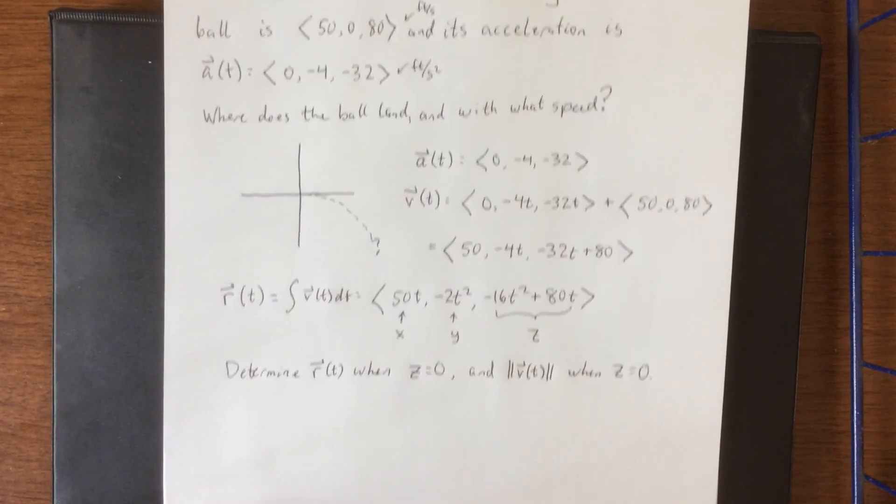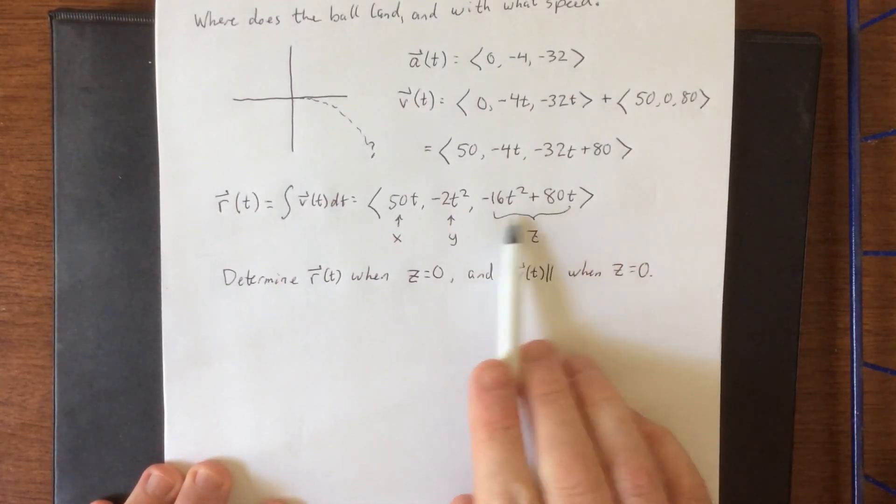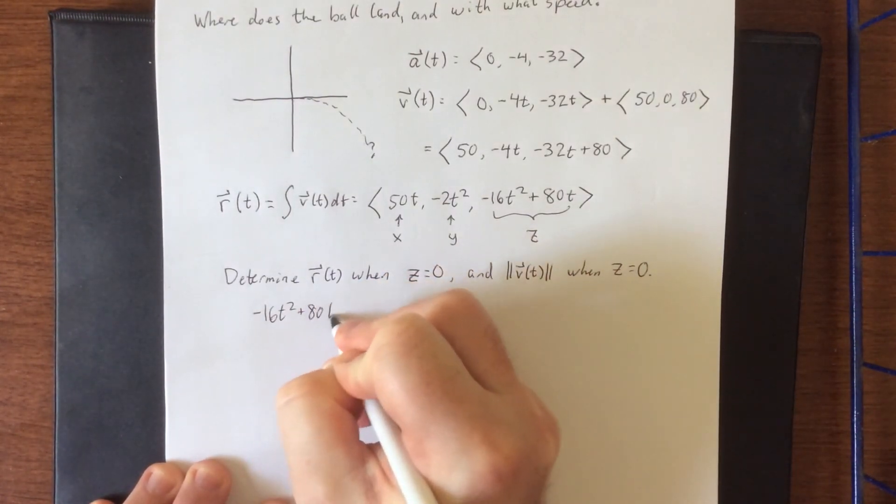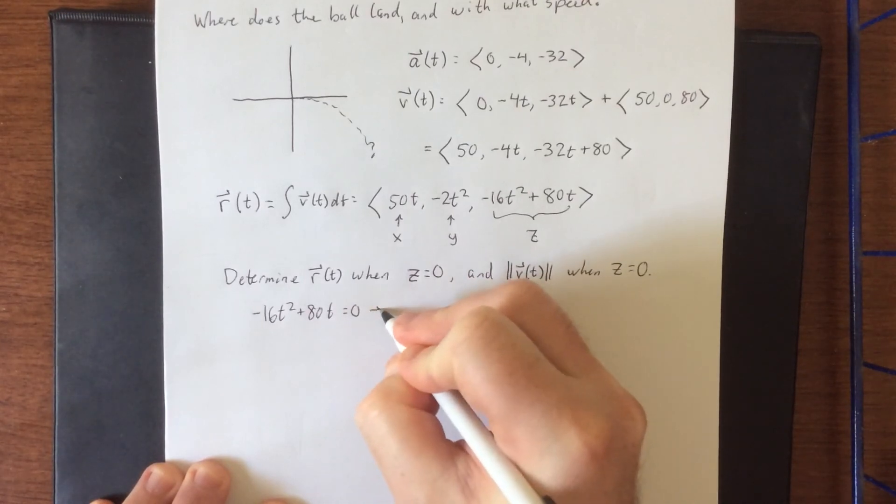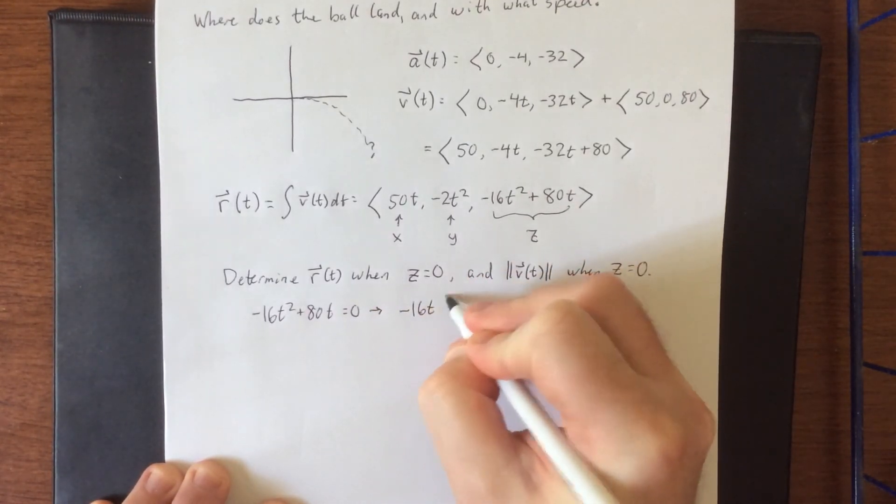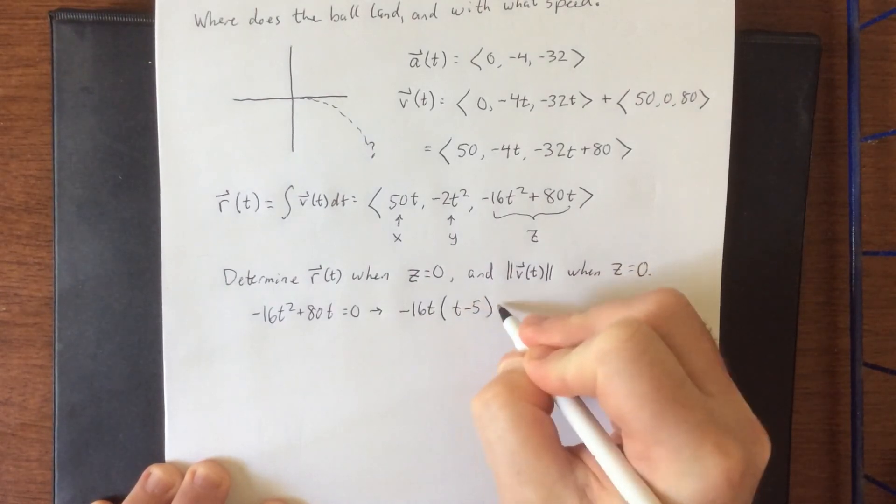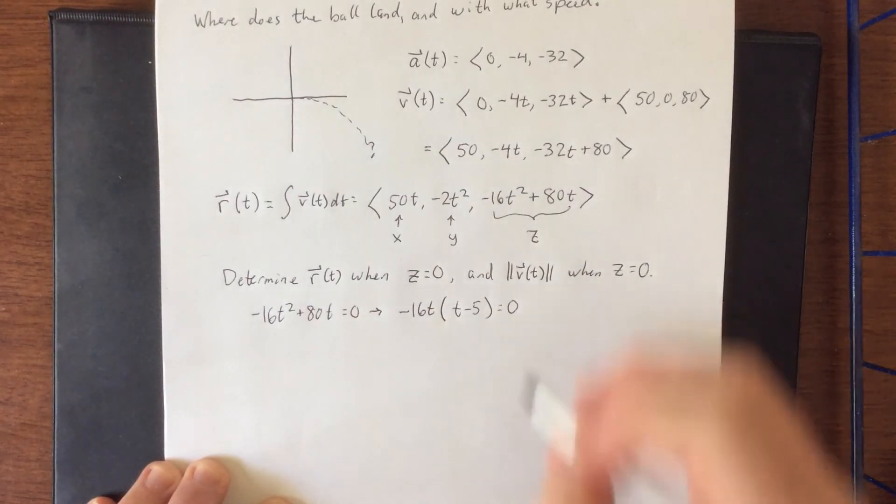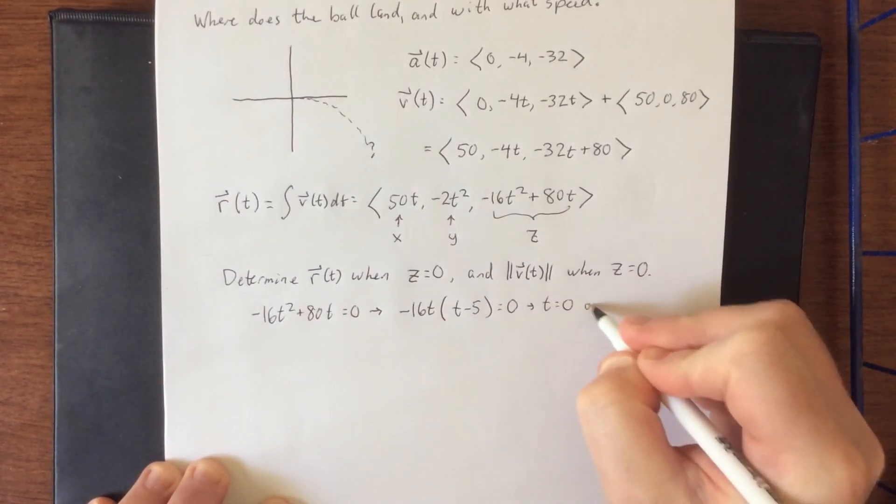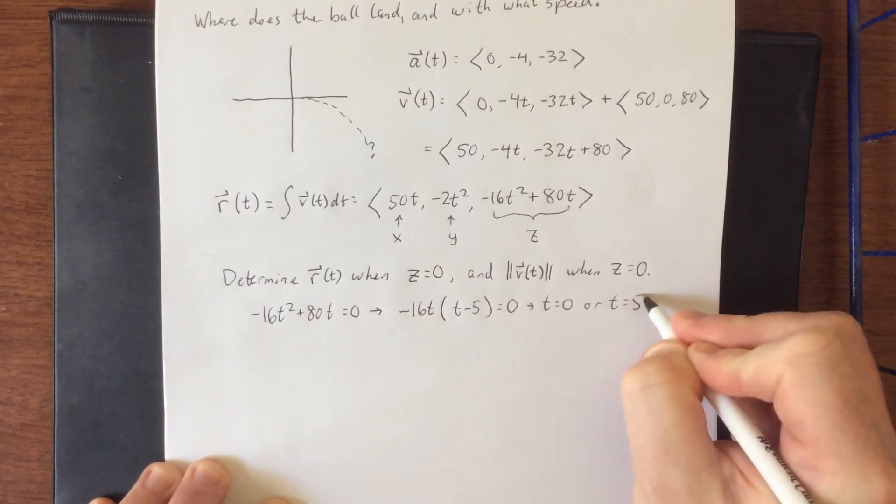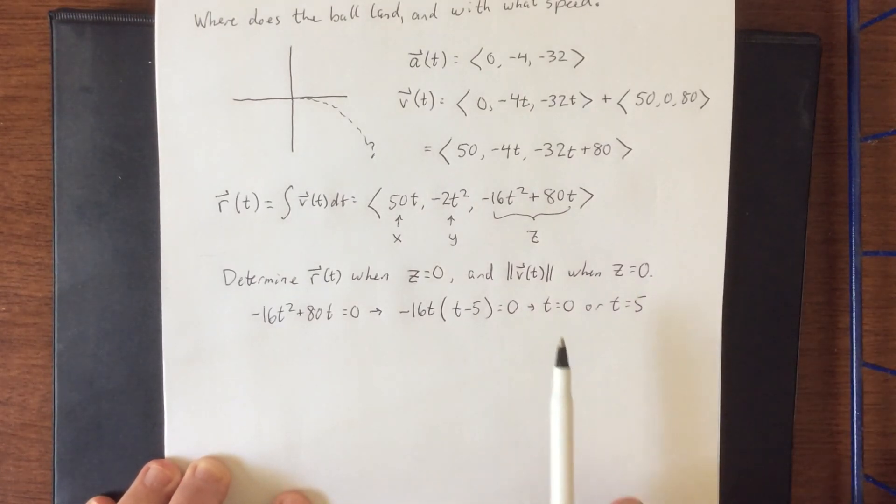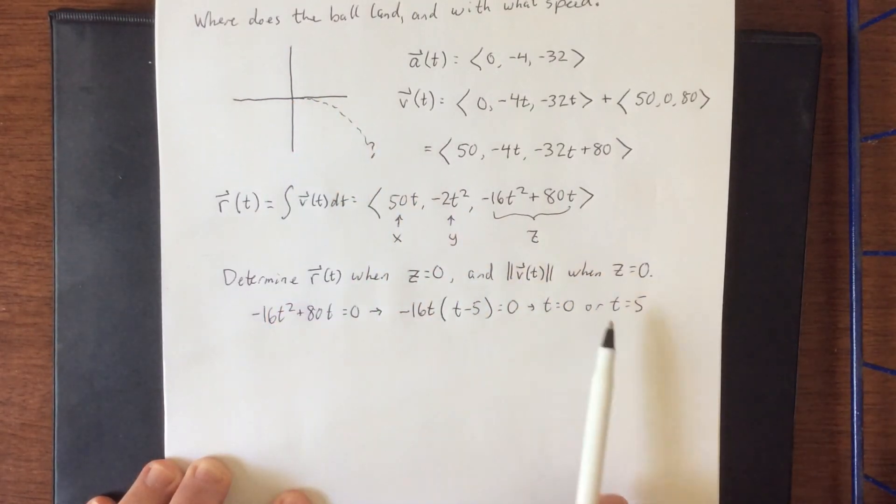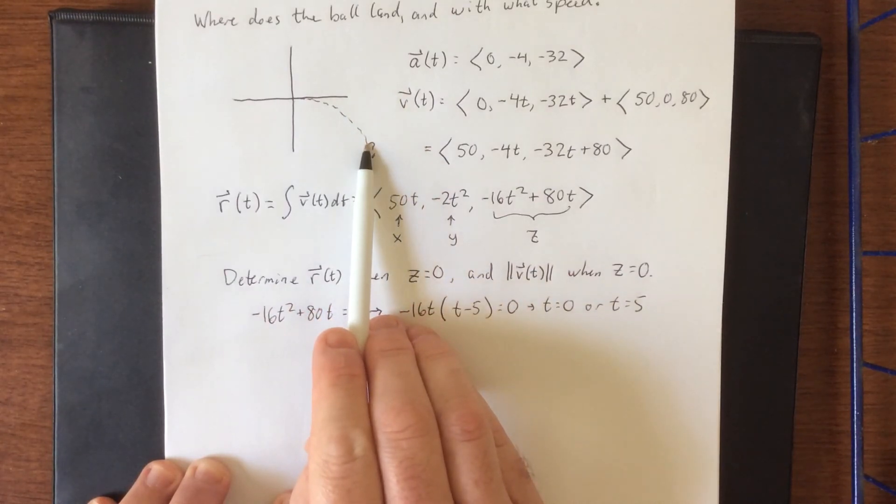So I suppose the first thing we should do is set z equal to zero and then we can solve for t. So I'll take the third component and set this equal to zero. Now there is a common factor that I can pull out. I'm going to pull out a -16t and upon pulling that out I'm going to get t - 5 left over. Setting each of these equal to zero we get that t is either equal to zero or t is equal to five. Now the interpretation of each of these is when t is zero that's when it's initially being launched. It will land again once it gets back down to t equals five.